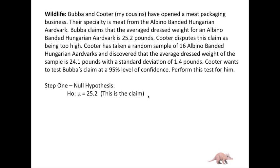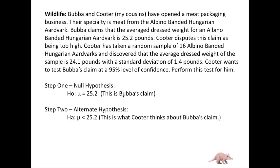Step one is to develop the null hypothesis. The null hypothesis is that mu equals 25.2 — this is Bubba's claim. The alternate hypothesis is what Cooter thinks about Bubba's claim. Bubba claims it's 25.2, and Cooter thinks this is too high. That claim of 'too high' translates to the alternate hypothesis that mu is less than 25.2.